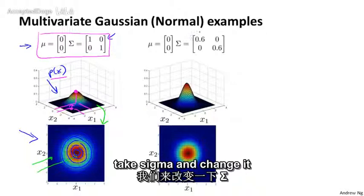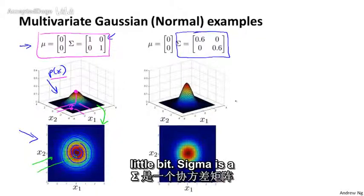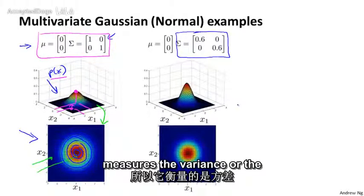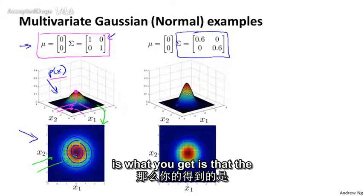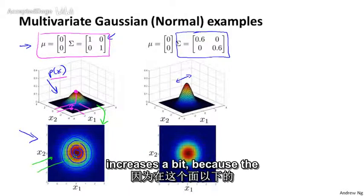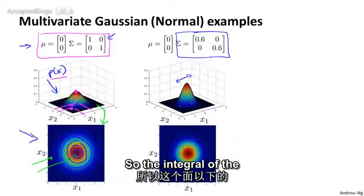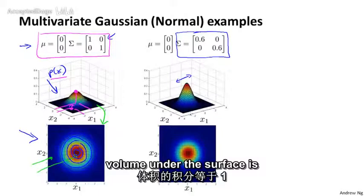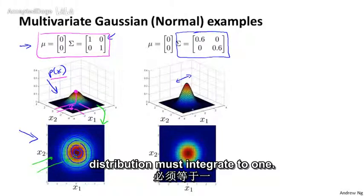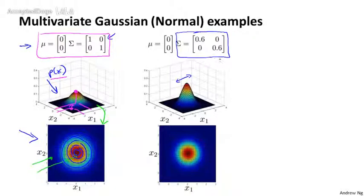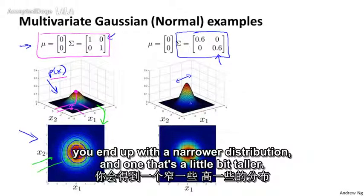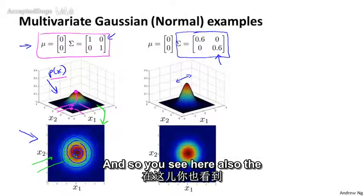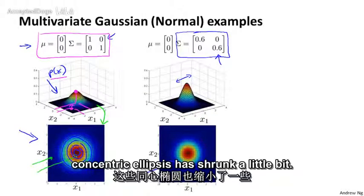So let's take sigma and change it. So let's say sigma shrinks a little bit. Sigma is the covariance matrix, and so it measures the variance or the variability of the features x1 and x2. So if you shrink sigma, then what you get is that the width of this bump diminishes and the height also increases a bit because the area under the surface is equal to one. So the integral of the volume under the surface is equal to one because a probability distribution must integrate to one. So if you shrink the variance, it's kind of like shrinking sigma squared, you end up with a narrower distribution and one that's a little bit taller. And so you see here also the concentric ellipses has shrunk a little bit.